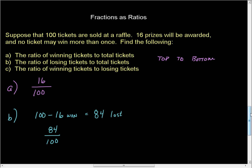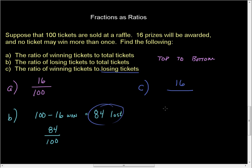Part C asks the ratio of winning tickets to losing tickets. Winning tickets to losing: winning goes on top, and we know that 16 of them won. But on the bottom, we don't put 100 — we're looking for losing tickets. We found that here. So we have 84.